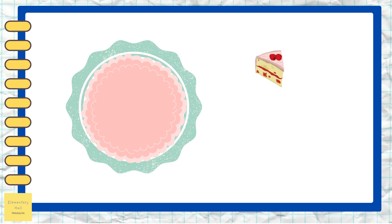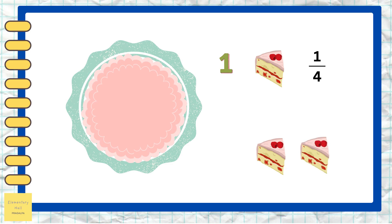If we take one slice of cake, which is one part of the whole cake, this is called one-fourth, written as one by four. And if we take two slices of cake from this whole cake, which is two parts, this is called two-fourth, written as two by four.